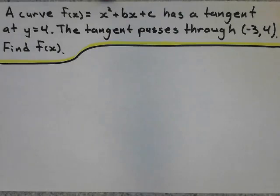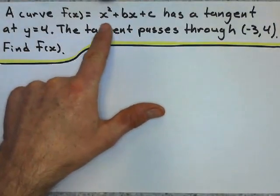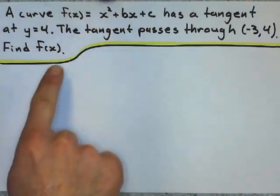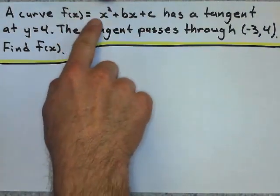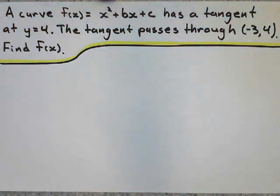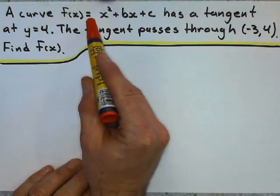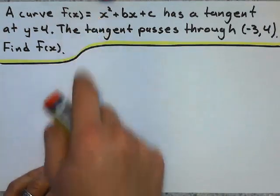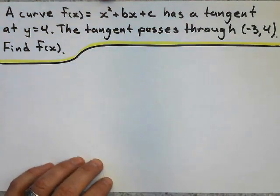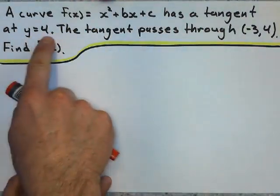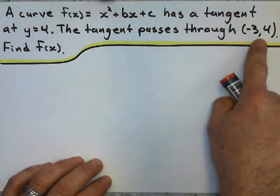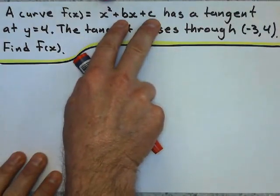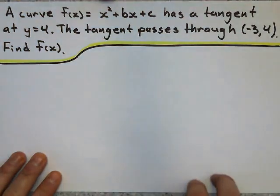Okay, so here's the question. I've got a curve, and I don't know the coefficients b and c. Now for this question, a quadratic has a coefficient in front of the x squared, usually a. This one doesn't have that, so the assumption we are going to make is that a equals 1, because they don't give us a coefficient there. So that's the first thing.